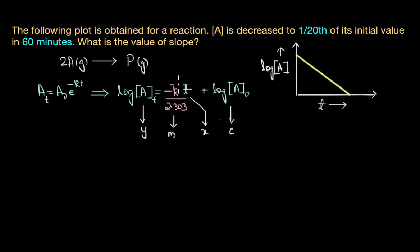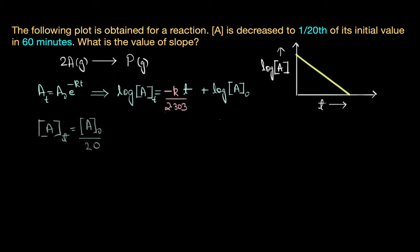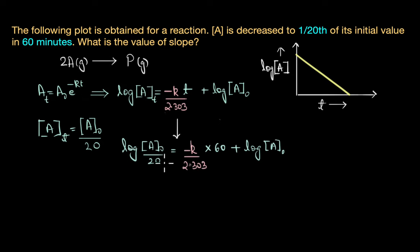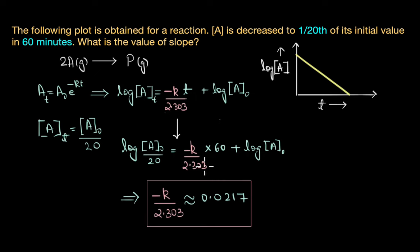From the question, A_t is 1/20th of its initial concentration, which is A₀/20, and time is 60 minutes. Substituting these values: log(A₀/20) = −(k/2.303) × 60 + log(A₀). Rearranging and solving this equation, we get the slope −k/2.303 ≈ −0.0217.